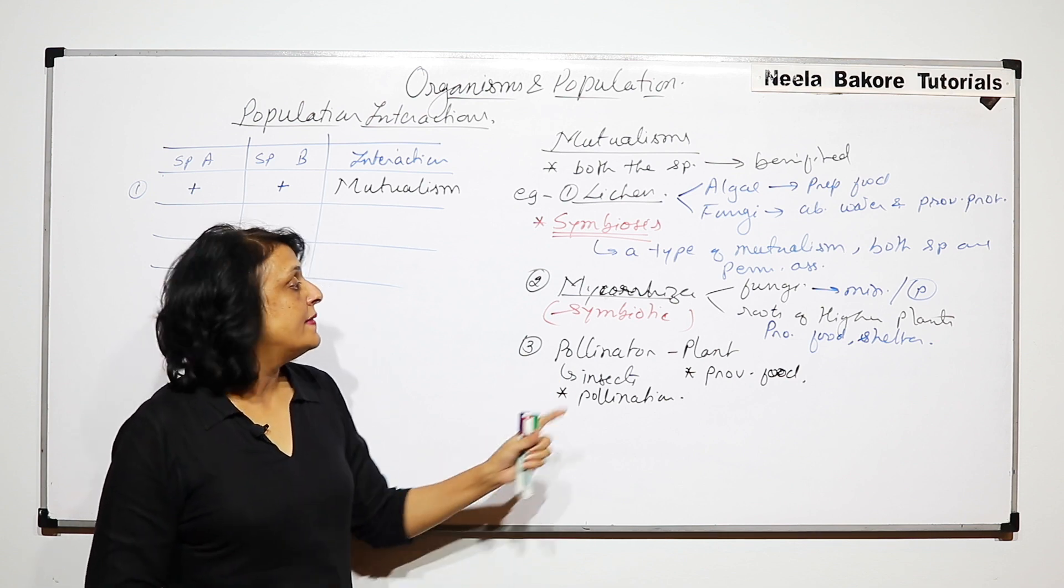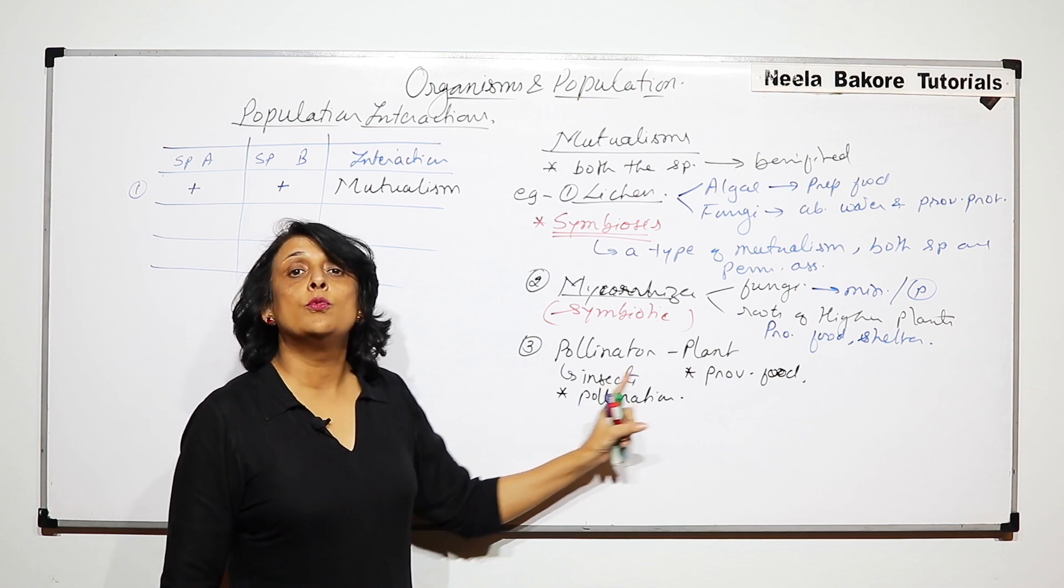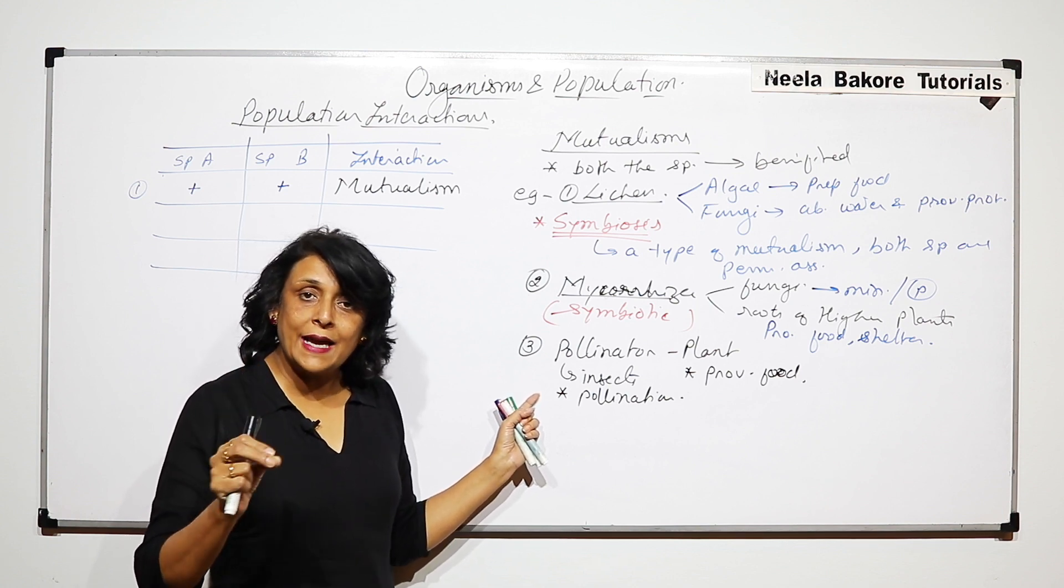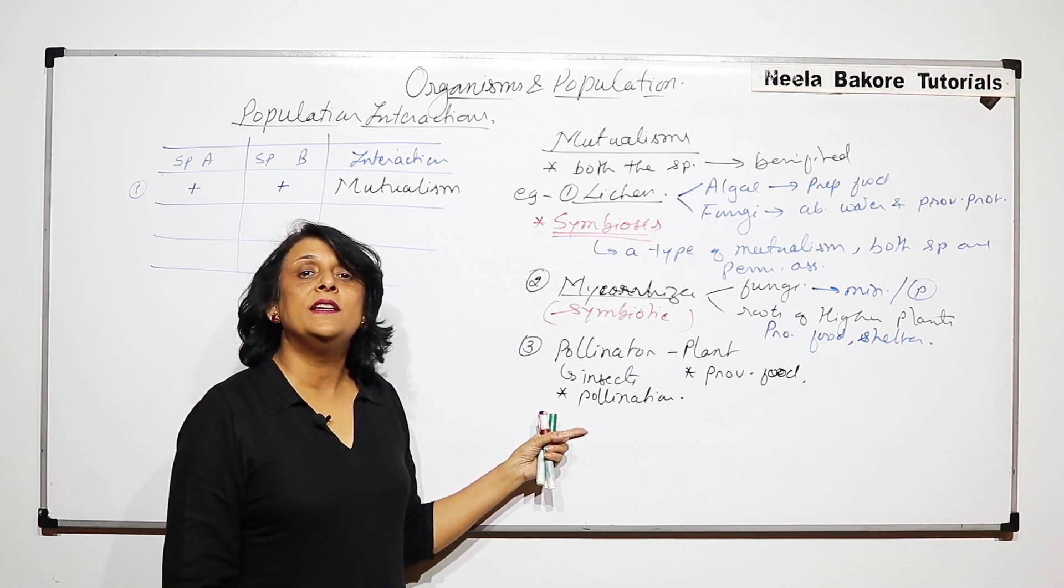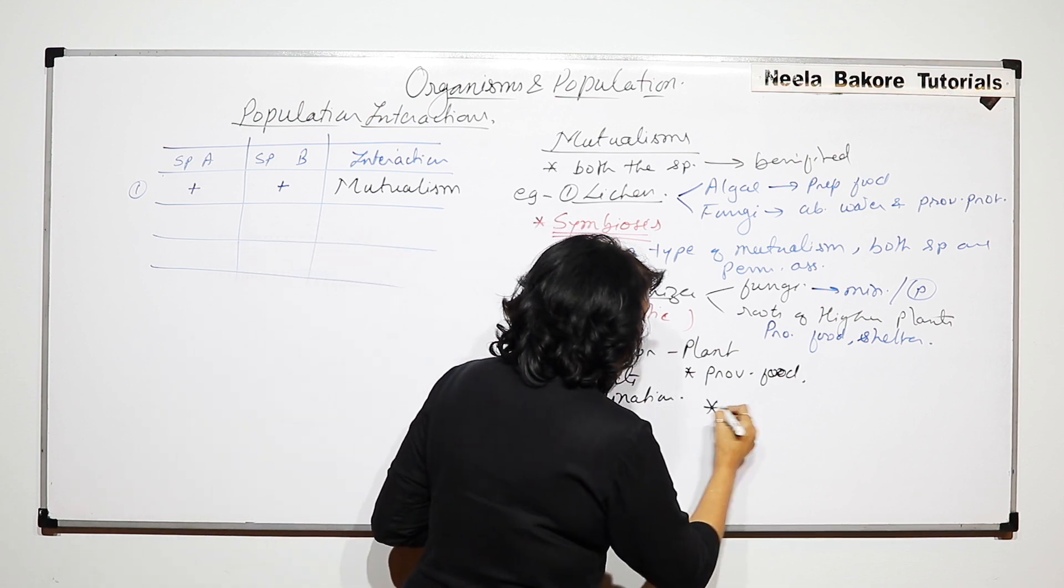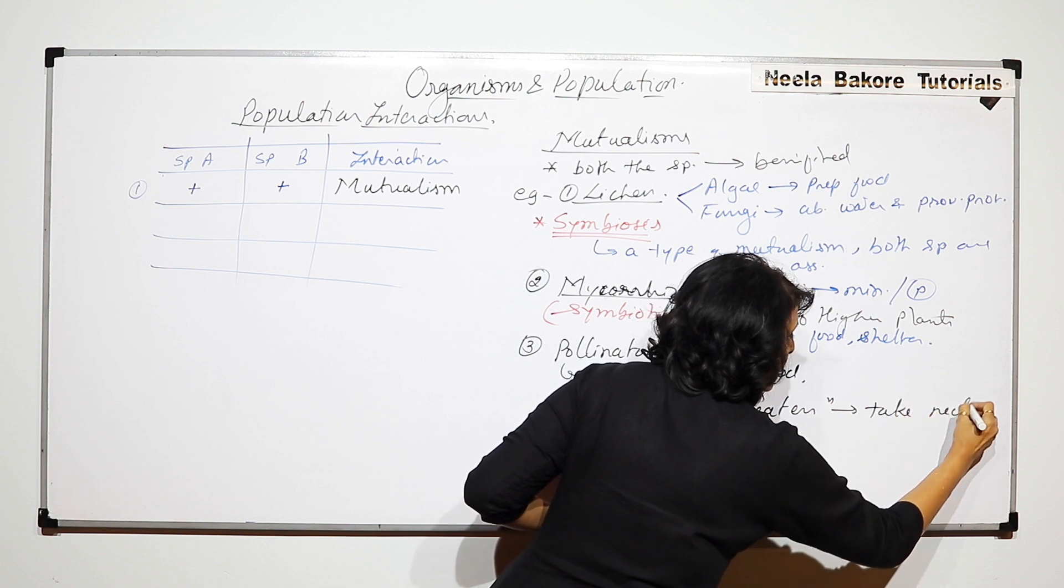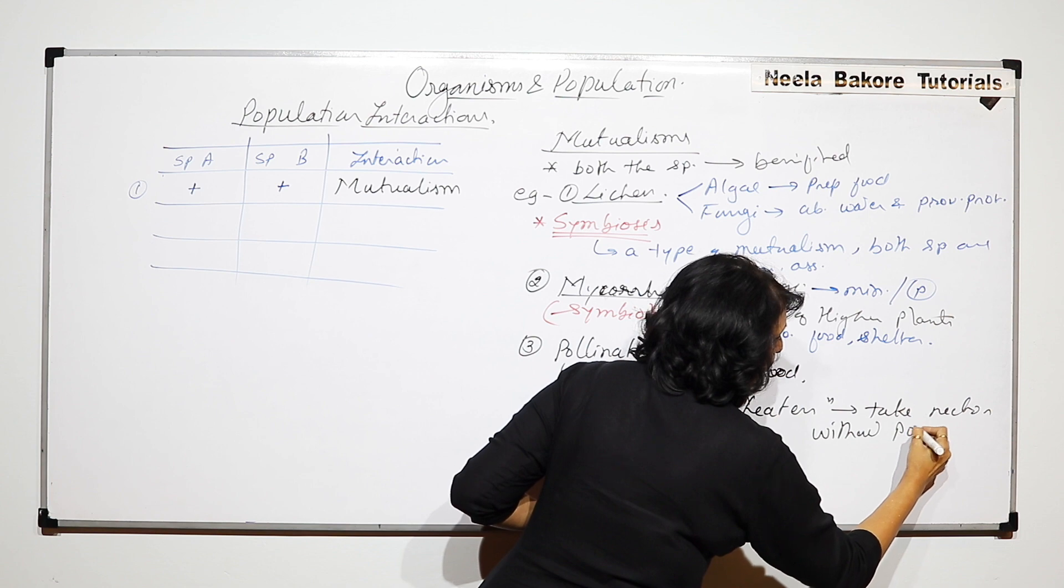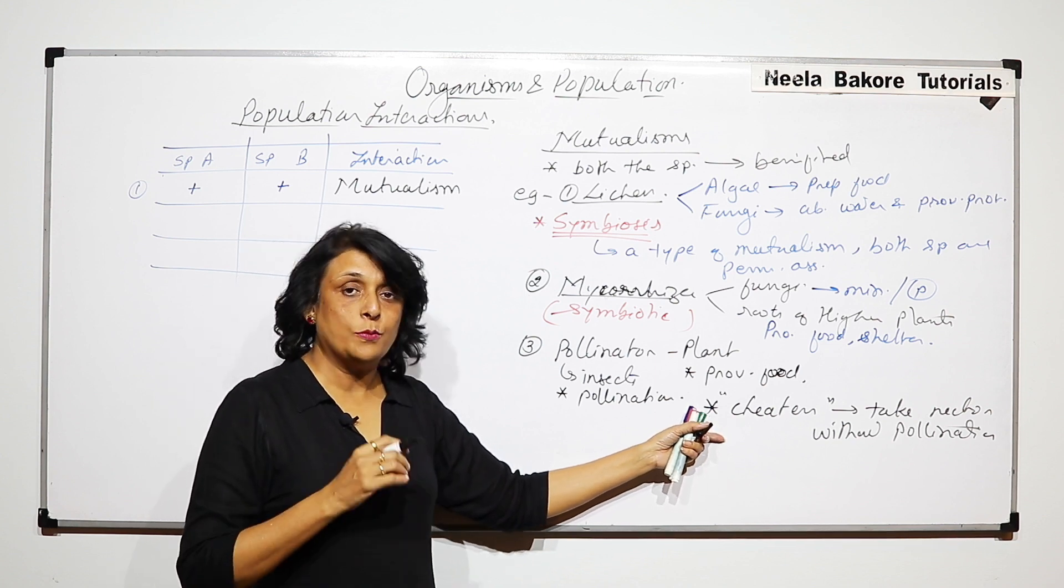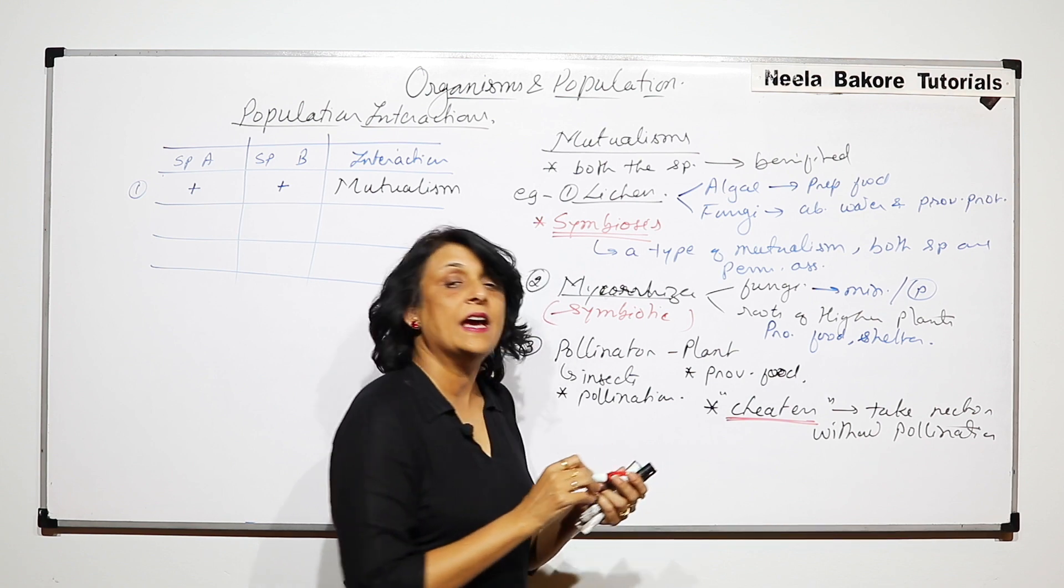Now, it is not always that the plant would provide the nectar or the pollinator would help in pollination. Many a times, it happens that insects, they visit the flower for the nectar and they just get the nectar but they do not pollinate. That means, they are just taking that nectar but not helping in pollination. Such insects are known as cheaters. So what are cheaters? Sometimes, they take the nectar without helping in pollination. This is one example where the insect would get the nectar which is its food but the plant is not going to get benefited.